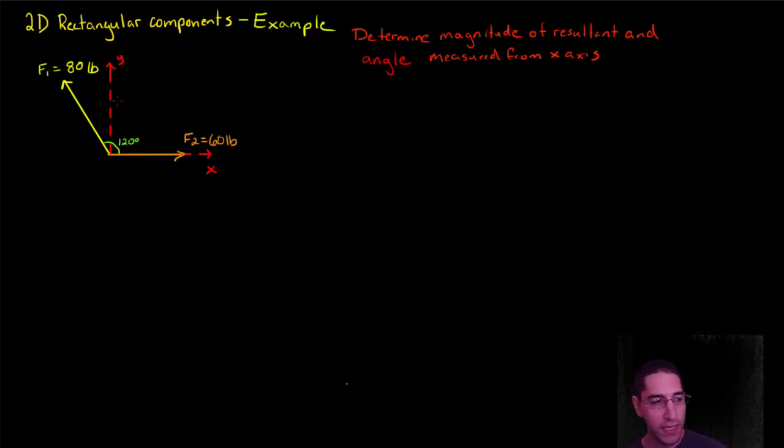So, first thing we need to do when we're working with 2D rectangular components, we need to determine positive directions. And we need to do this for both of our axes. We're using x-y coordinate system, so my positive x direction I'm going to say is to the right. My positive y direction I'm going to say is up.